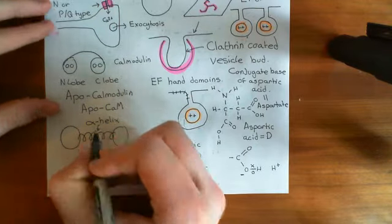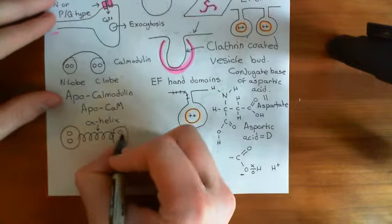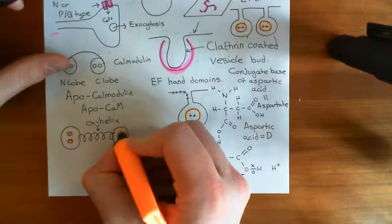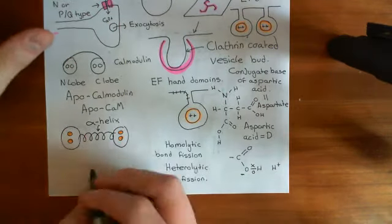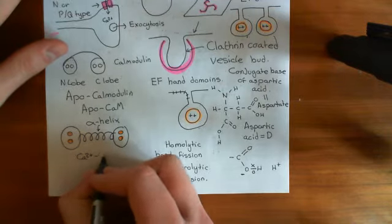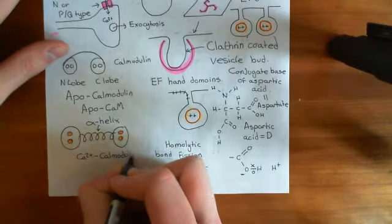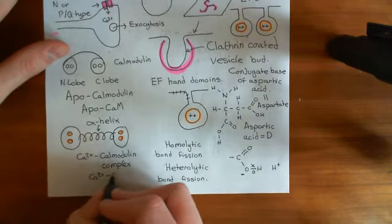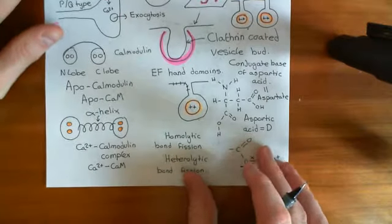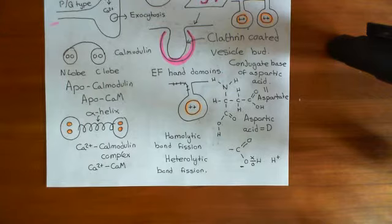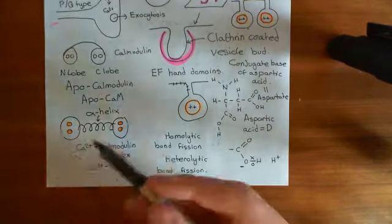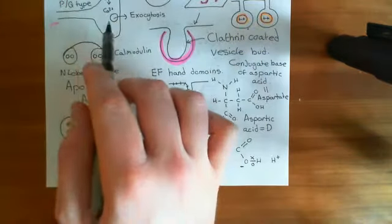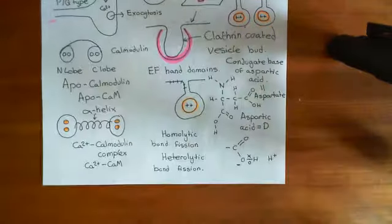So I'll draw this as a spring-like shape — an alpha helix linking the two lobes of calmodulin. Both lobes now have two calcium ions bound to them. This is what's known as a calcium-calmodulin complex, or for short, Ca2+-CaM. Calcium-calmodulin complexes have a very different interaction profile than apocalmodulin, and they will go and activate other proteins in the axon terminal.